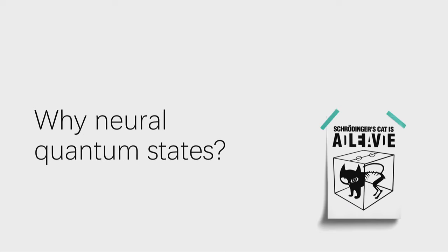First, I want to talk about why we use neural networks to express quantum states. As we know, neural networks have been applied to many machine learning problems. I want to use these machine learning examples to show why it is also reasonable to apply neural networks to the quantum many-body problems.